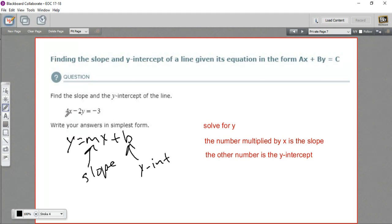I first need to get rid of this 4x. So this is a positive 4x. I'm going to subtract 4x from both sides. So on this side, it just leaves the negative 2y. On the other side, I'm going to write the x term first because that's how we traditionally write the slope-intercept form. So this is going to be a negative 4x. And then we've got a minus 3. Don't forget that minus sign.